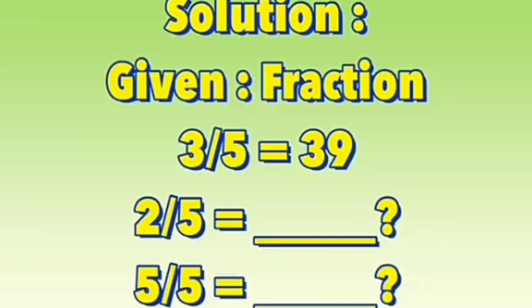Solution. We have to write down the given and we will make two columns — one for the fraction and one for the fruits. The given fraction is 3/5 equals 39 fruits, and 2/5 is the hidden part. The question asks for the total number of fruits in the basket.